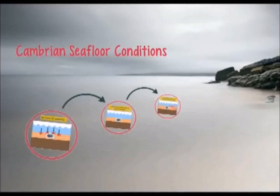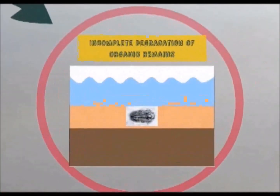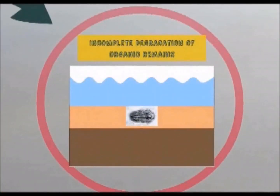However, during the Cambrian, the flow of oxidants from the sea water to the sediment was restricted, therefore preventing the action of microbial decomposition on soft-bodied creatures. The end result was an incomplete degradation of organic remains and the conservation of soft-body fossils as carbonaceous compressions. So, what exactly restricted the flow of oxidants from the sea water into the sea floor sediment?